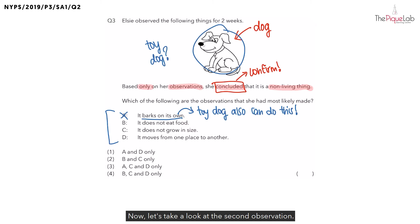Now, let's take a look at the second observation. The second observation is that the dog does not eat food. Let's consider the two scenarios again, a living dog and a toy dog. If this dog is a living thing, does it need to eat food? This dog would need to eat food to survive, correct? If not, what would happen to the dog? The dog would die.